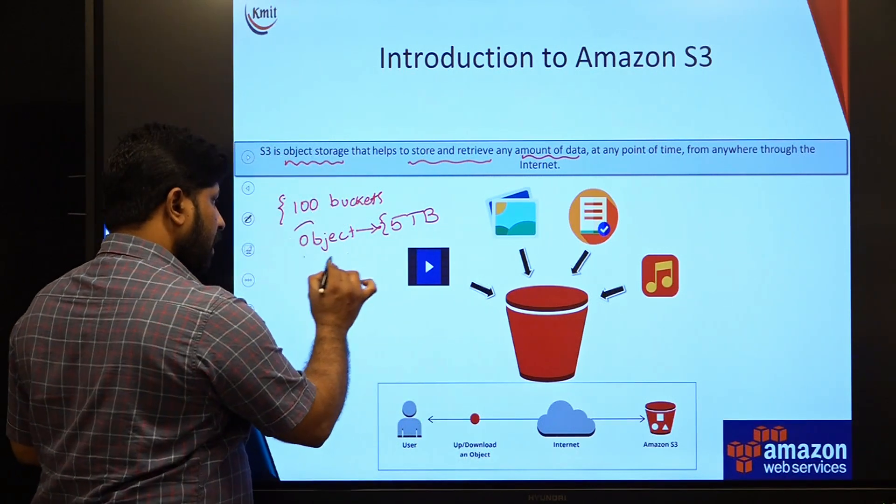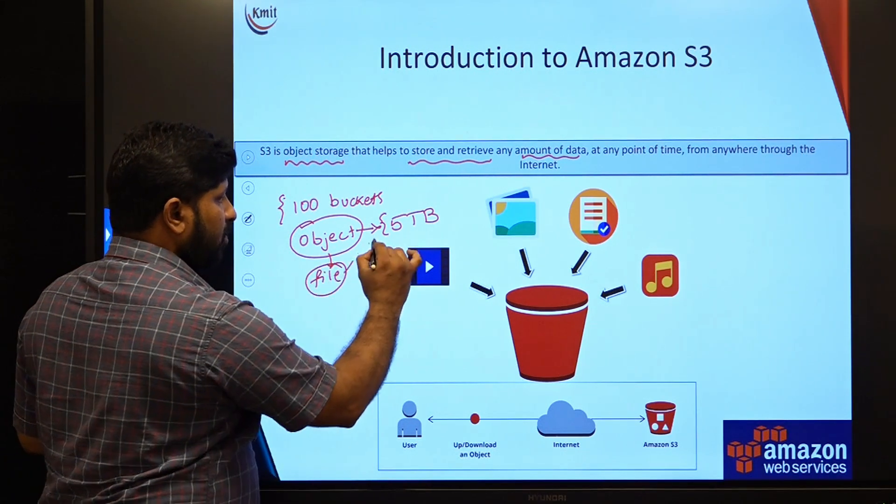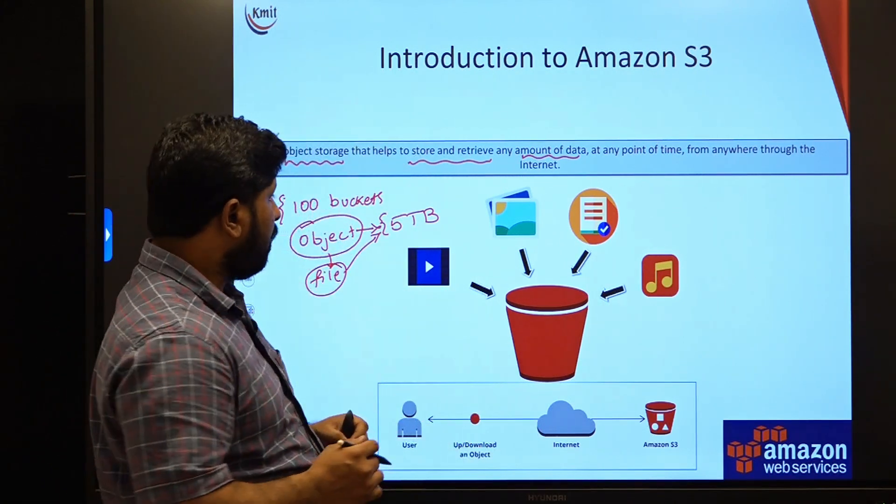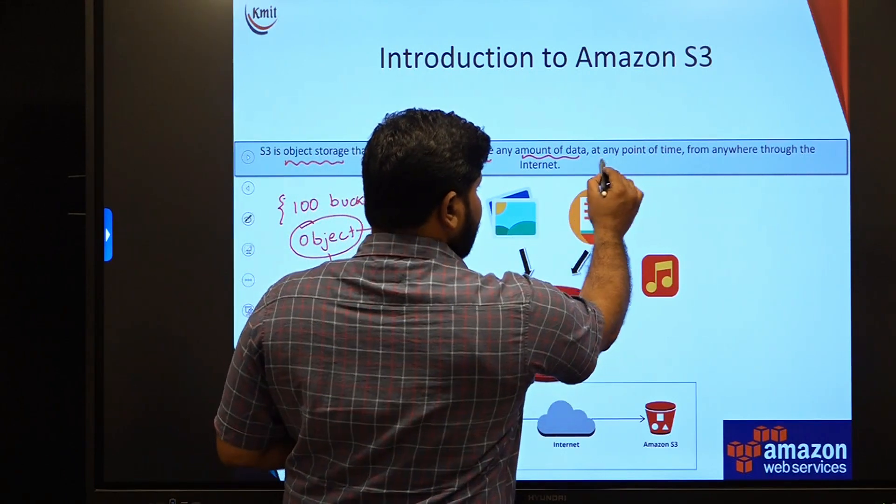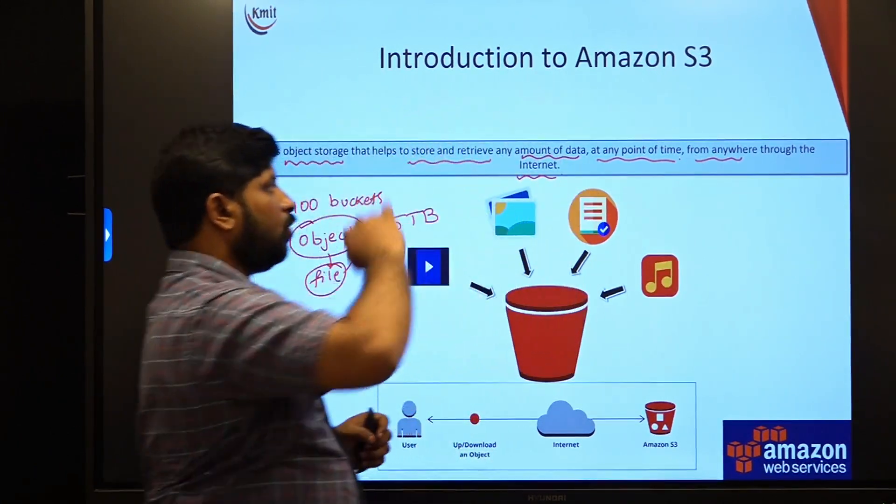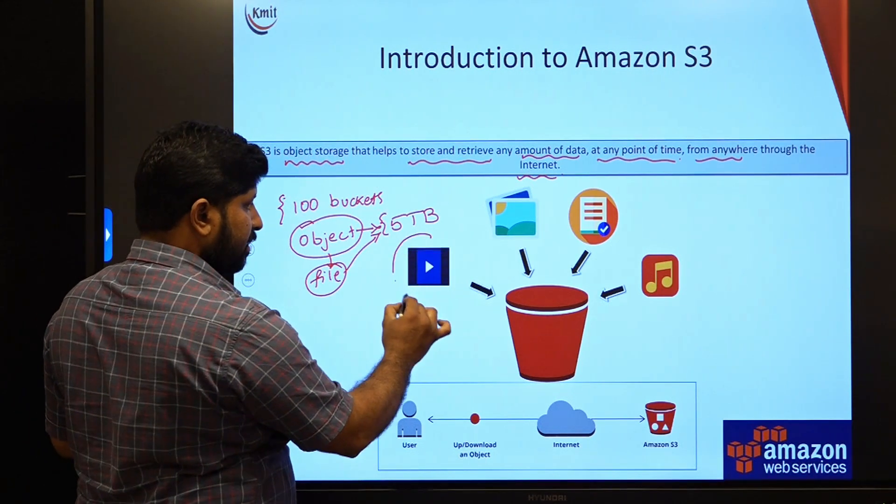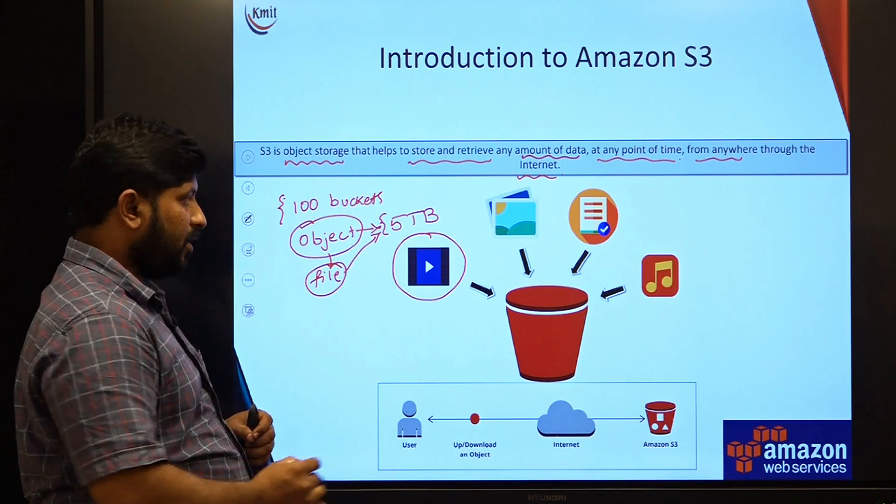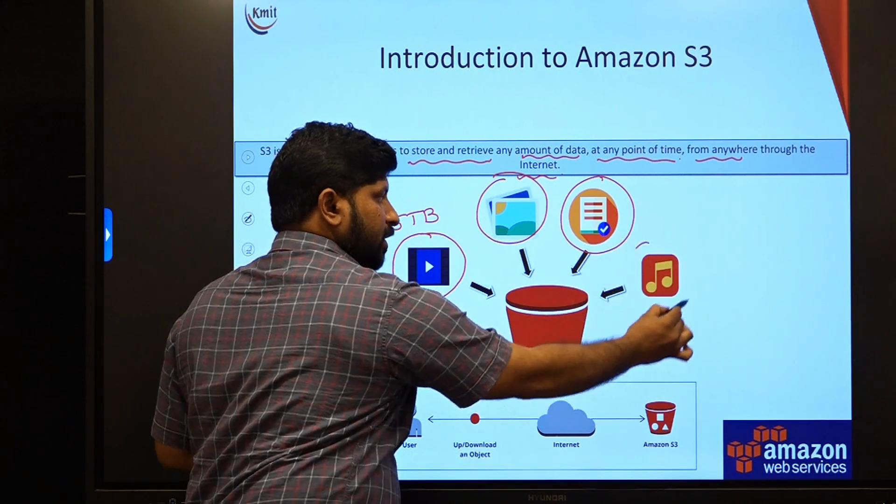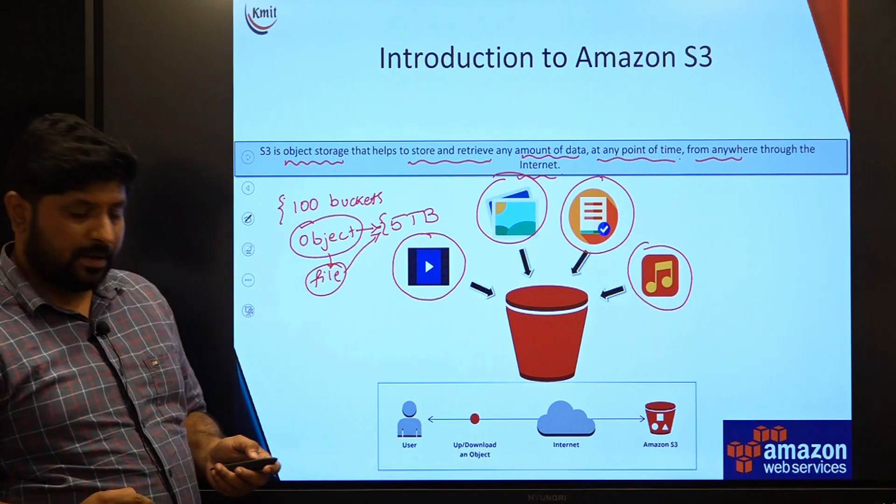How we can deal with this object? Object is just like a file. The file with not more than 5 terabytes. 5 terabytes itself is huge. This can be accessed at any point of time, from anywhere if the device is connected through the internet. Majorly, as we have discussed, object store can store either videos or image files or any text documents or music files. All these can be stored in an S3 storage.